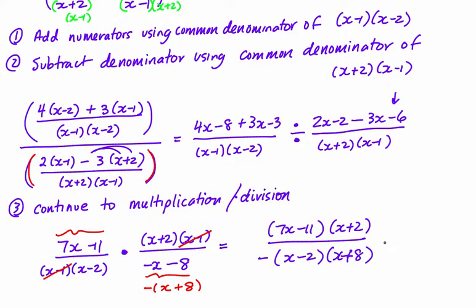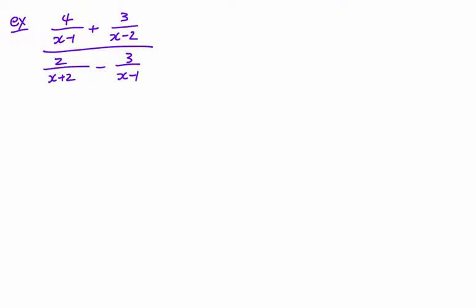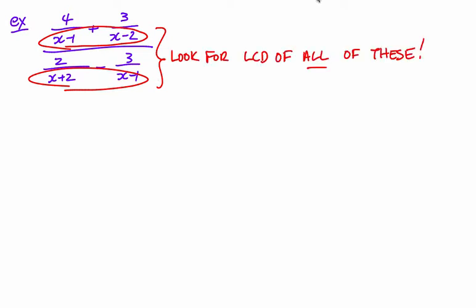Let's take a look at another way to do this exact same question that leads to the same answer but has some different steps, especially near the beginning. In this method, instead of finding a common denominator just for the top two terms and then separately for the bottom two terms, I want to look at all four denominators at once. The lowest common denominator for all of them is: I've got (x − 1), (x − 2), and (x + 2) — and (x − 1) is already listed — so the LCD is (x − 1)(x − 2)(x + 2).